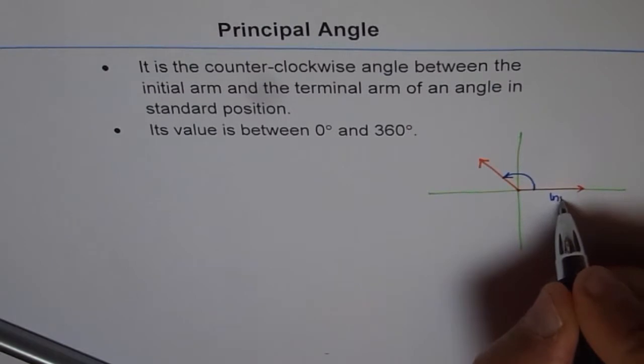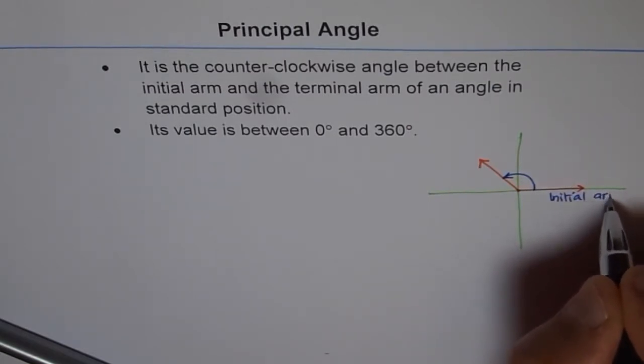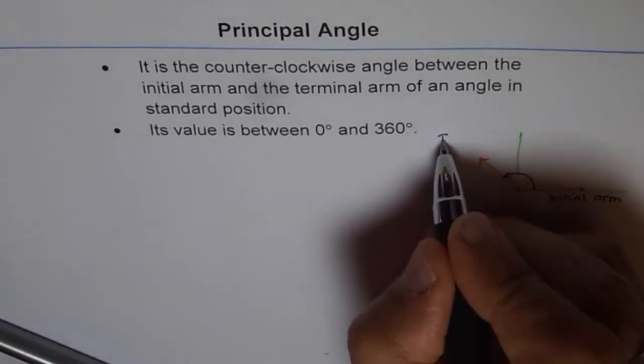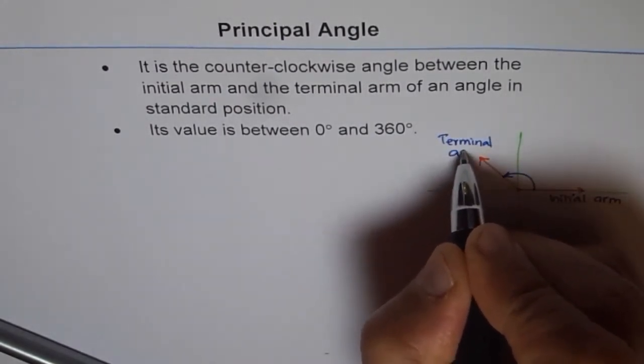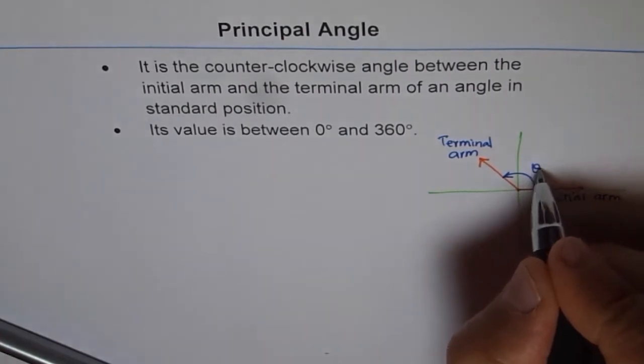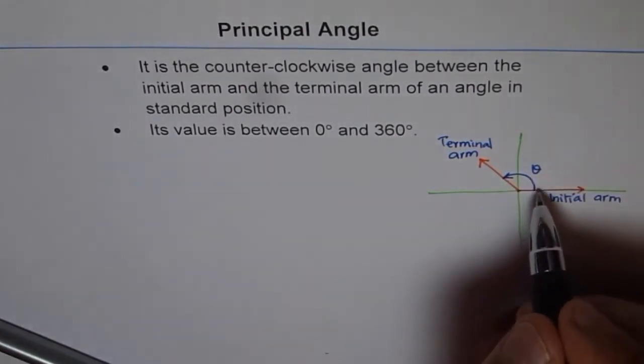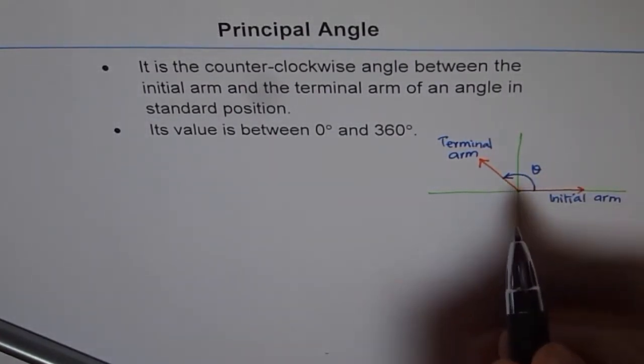So this is our initial arm and that is our terminal arm. And that angle theta, as it moves counterclockwise, is the principal angle.